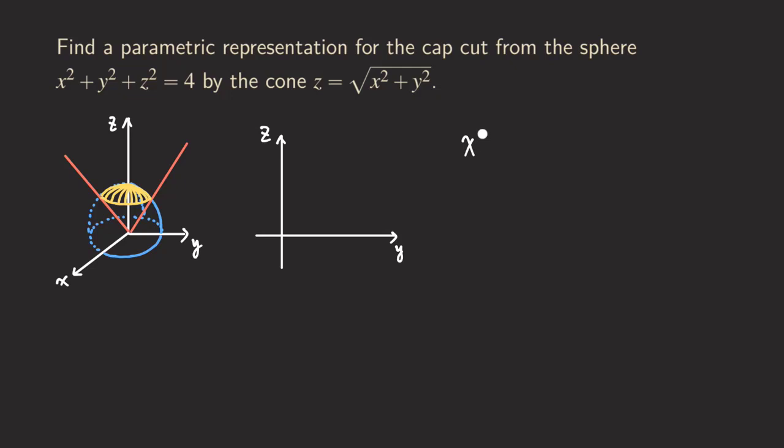So we are going to start by writing x of φ and θ. As you know that we can use u and v if you want to. And then let's write it down right here.